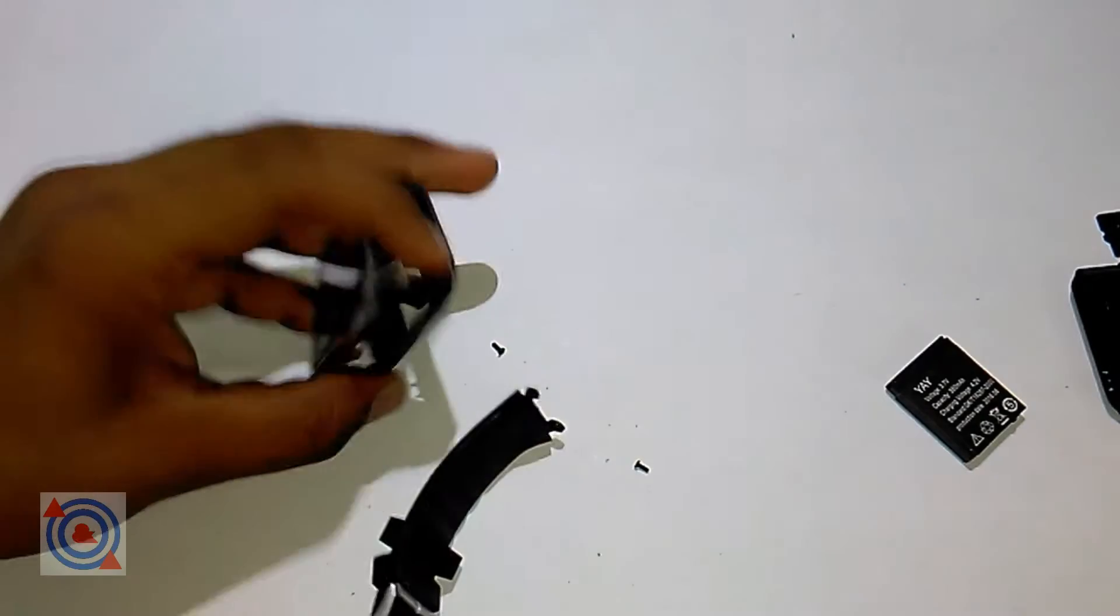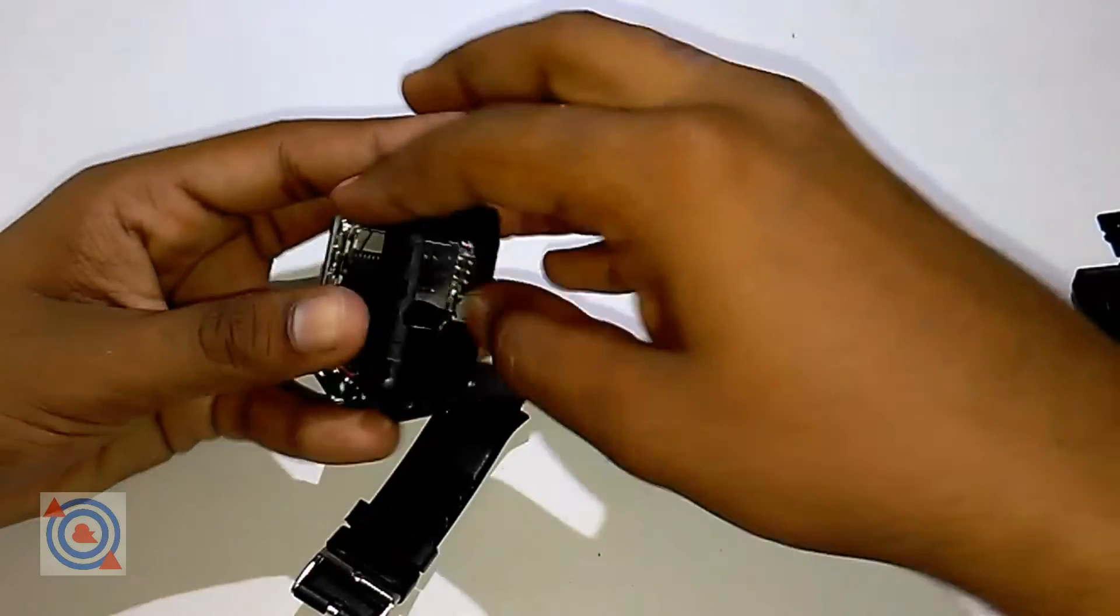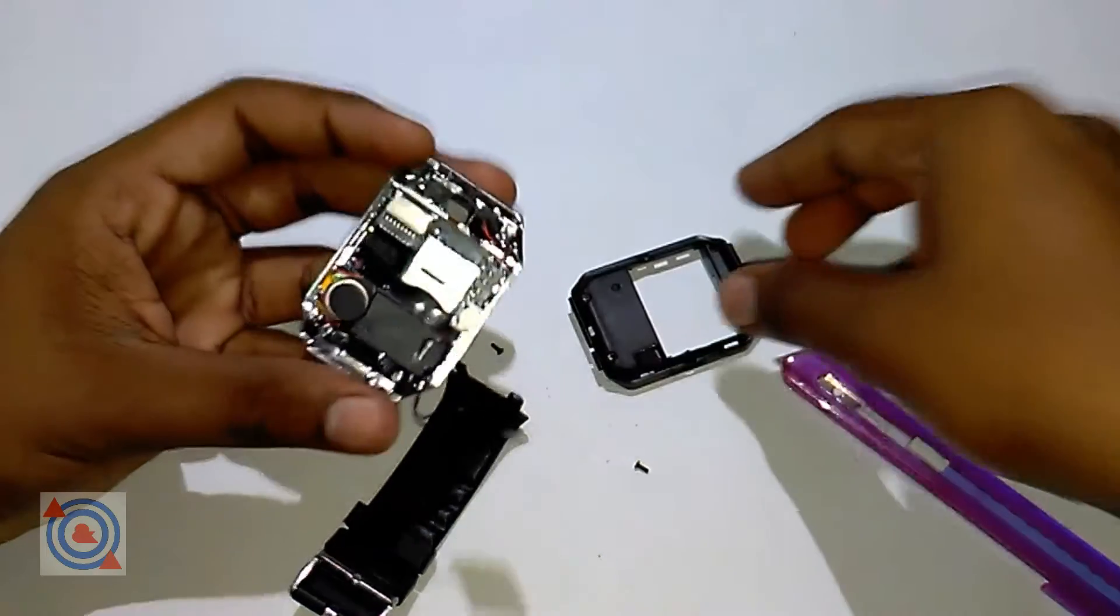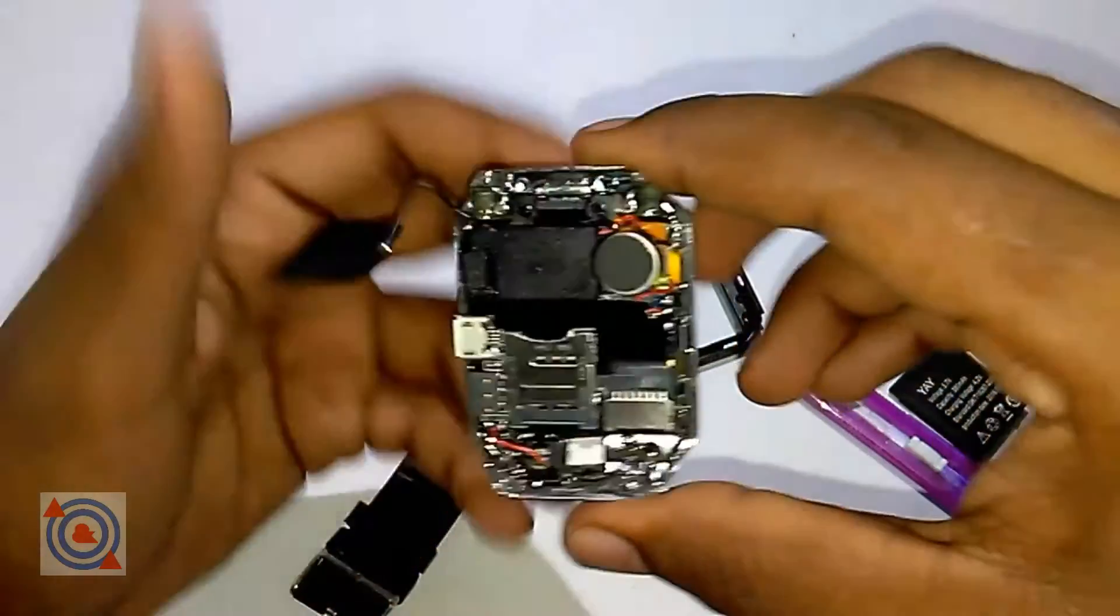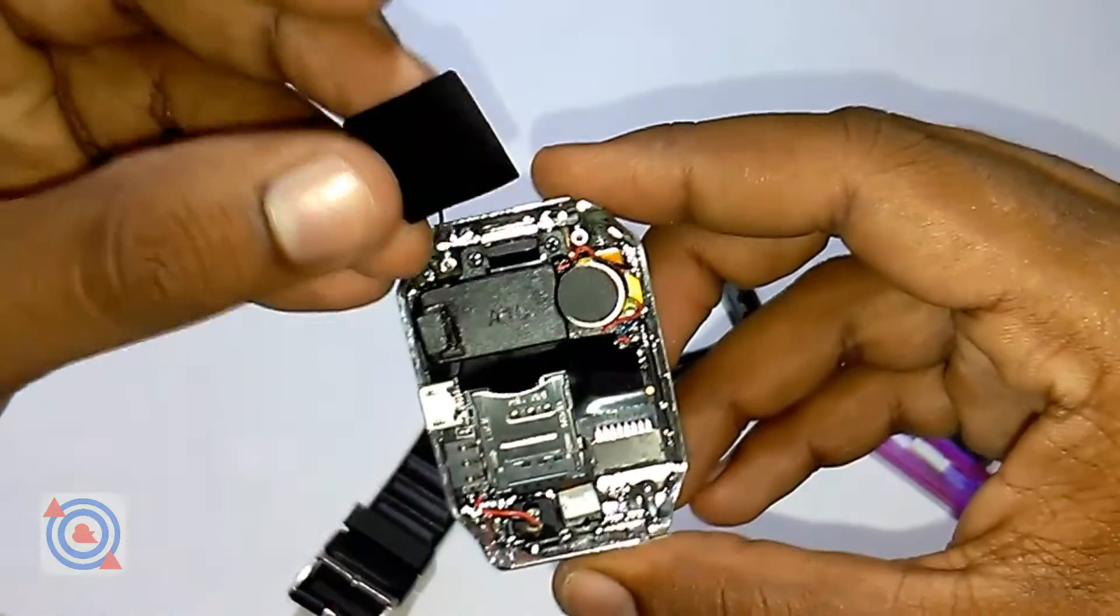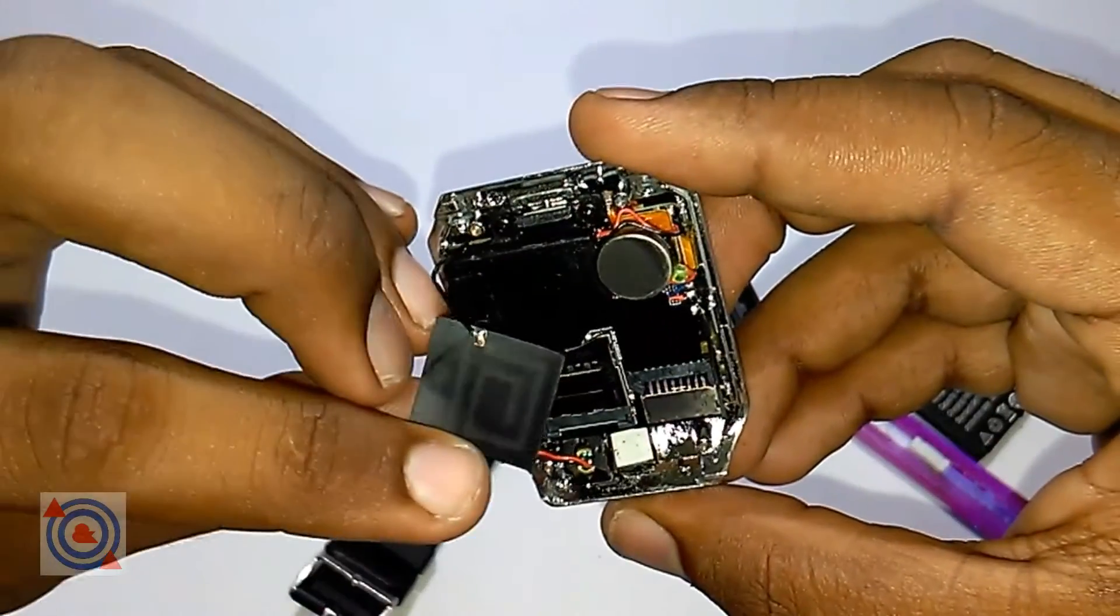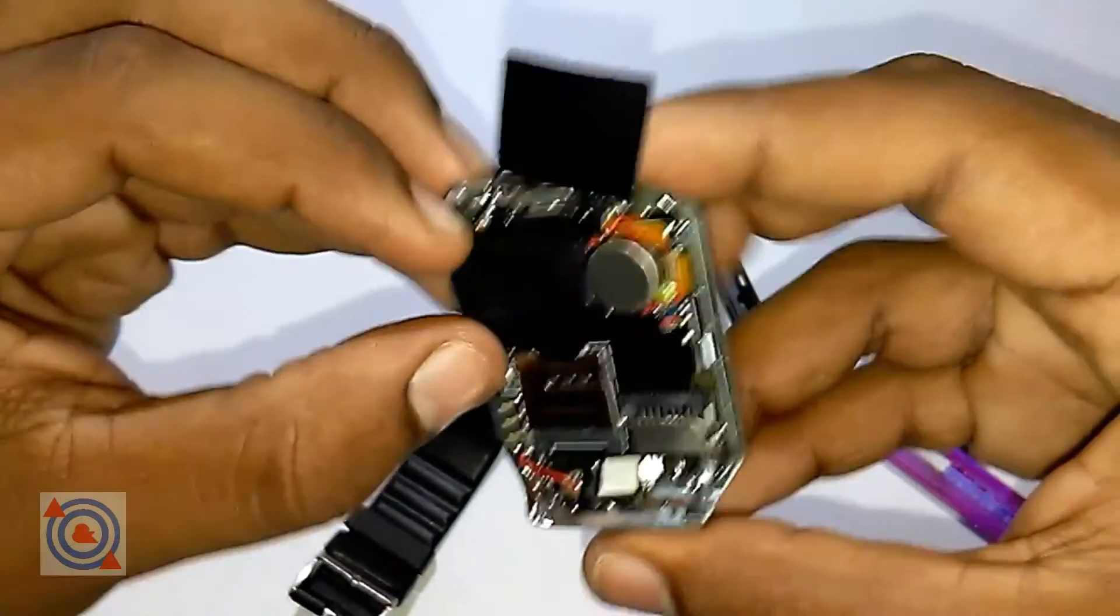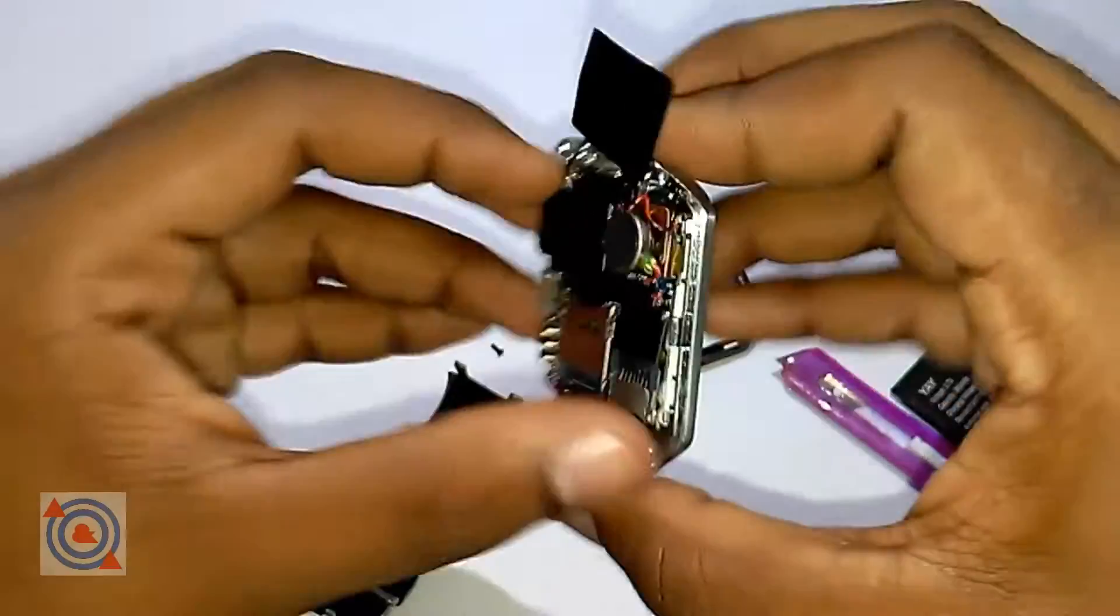The strap comes out and here we get the inner look of this DZ09. This is sort of compact, I would say. I think this is a sensor - I see a pedometer sensor as well.